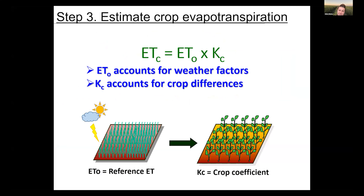Calculating evapotranspiration is relatively easy because you need two main parameters: reference evapotranspiration (ET₀) and the crop coefficient. Reference evapotranspiration is basically a measure of how hot and dry an environment is — water placed outside on a hot August day evaporates faster than on a cool, humid April day. The reference ET accounts for the environment, while the crop coefficient accounts for crop-specific water use. For example, the crop coefficient of olive is very different from almond, because almond uses more water.